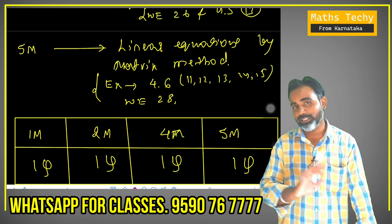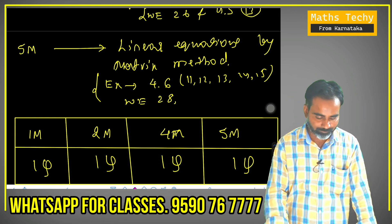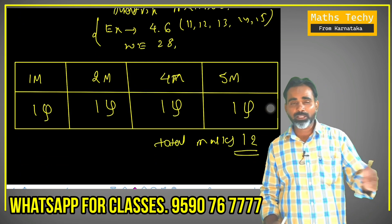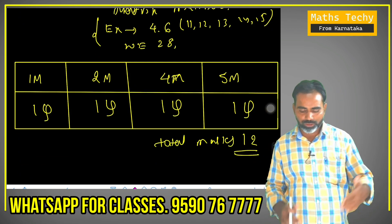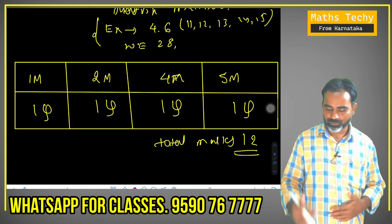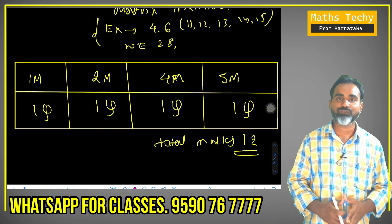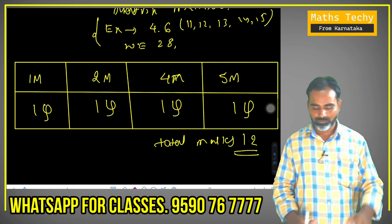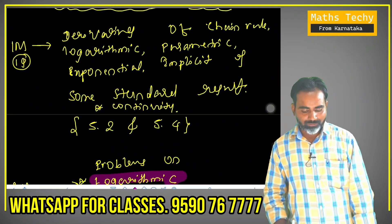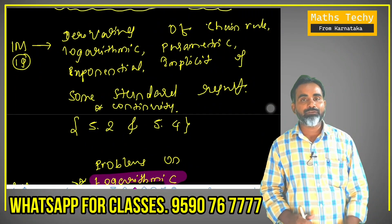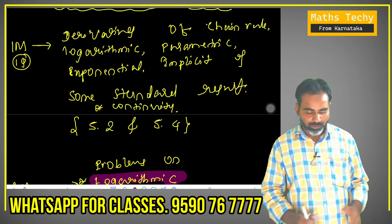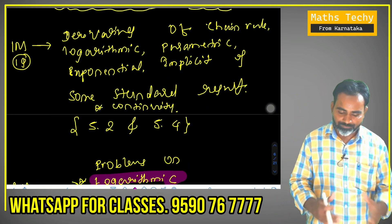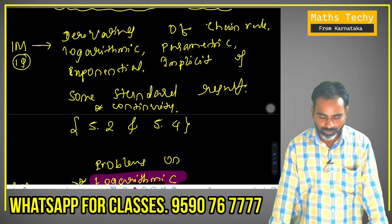5 marks is a guaranteed question. Marks breakdown: 1 mark 1 question, 2 marks 1 question, 4 marks 1 question, 5 marks 1 question — total it carries 12 marks. So I will note that continuity and differentiability.